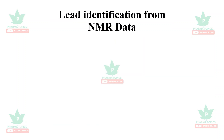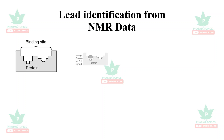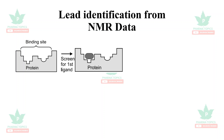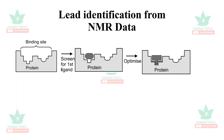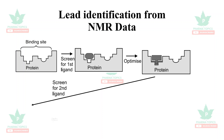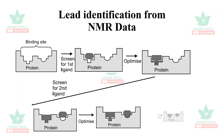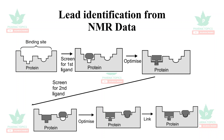Lead identification has advanced further — leads can now be identified from NMR data. You identify a protein binding site, screen for a ligand, optimize the ligand to fit the protein using NMR data, screen for a second ligand, design the compound, fit it into the protein, optimize it, and find the best lead for that protein.